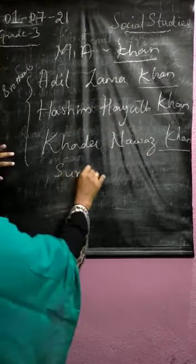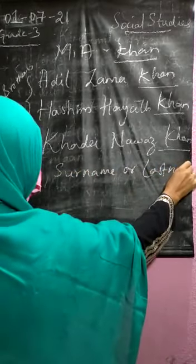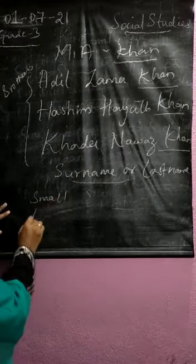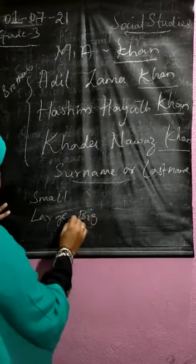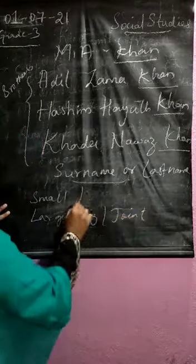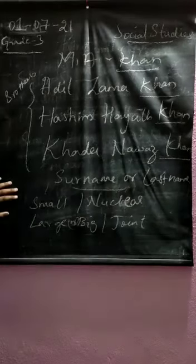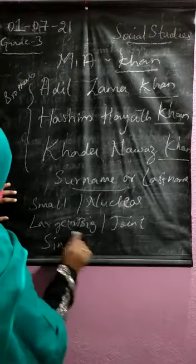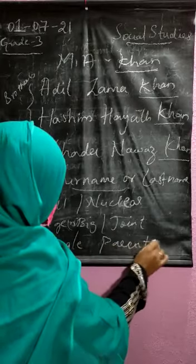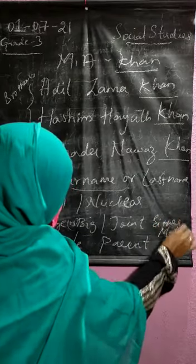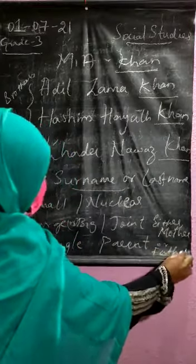So we conclude with the surname — what do you mean by surname, or the last name? Till now, what have we seen? We came across what is a family: the members you live together with. How many kinds of family? The small family, the large or big family also called joint family, the nuclear family, and the single parent family where either the mother or the father takes care of the child — they have only one parent with them.